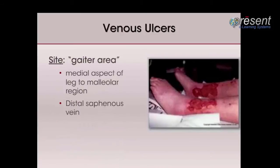Venous leg ulcers are typically found above the medial ankle in the gaiter area. They do not develop on the toes, foot, or above the calf muscle.